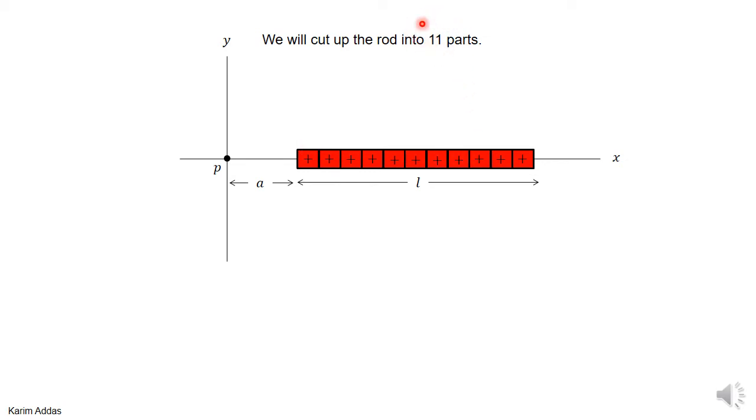Why the number 11? Of course there's no reason for it to be 11. In principle, the only thing we know how to do is calculate the electric field due to a point charge. So ultimately, we need to make the number of elements go to infinity. But just to illustrate the idea, I want to cut it up into 11 parts to show you the qualitative argument for the problem.